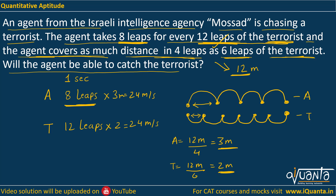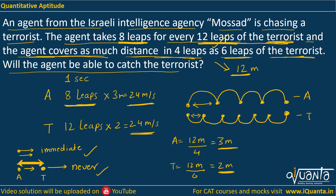Now we have an interesting case here — both of them have the same speed. We were asked: will the agent be able to catch the terrorist? We haven't been told if they are separated by some distance or starting at the same time. One case: if both start from the same point at the same time, the agent will immediately catch the terrorist. Another case: if there is some distance between them before they start running, since both run at 24 meters per second, that gap will always be maintained and the agent will never catch the terrorist. So we have two possible answers.